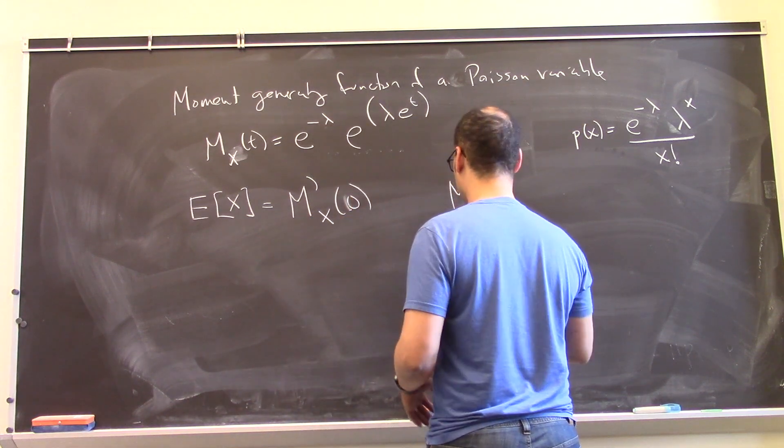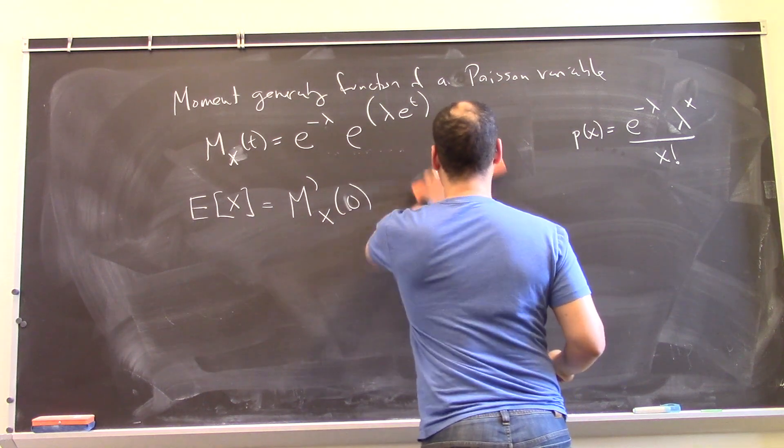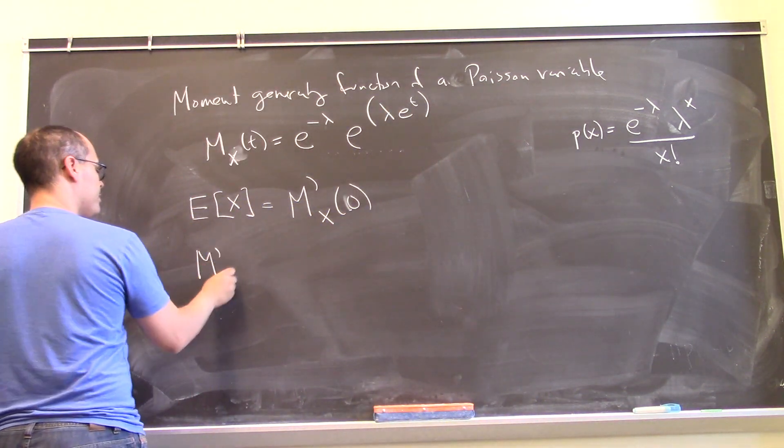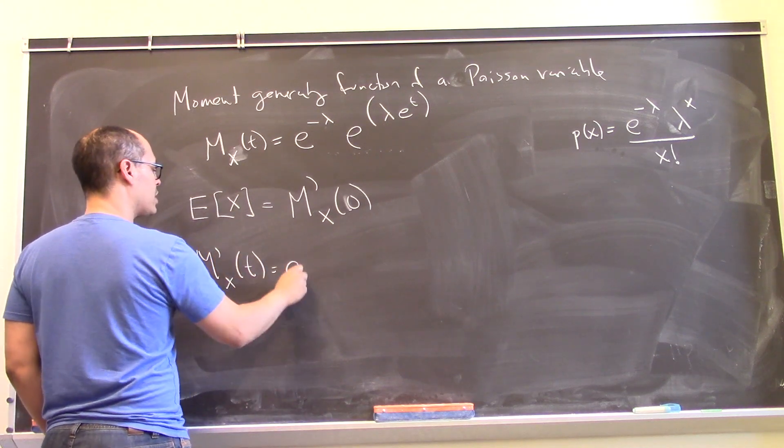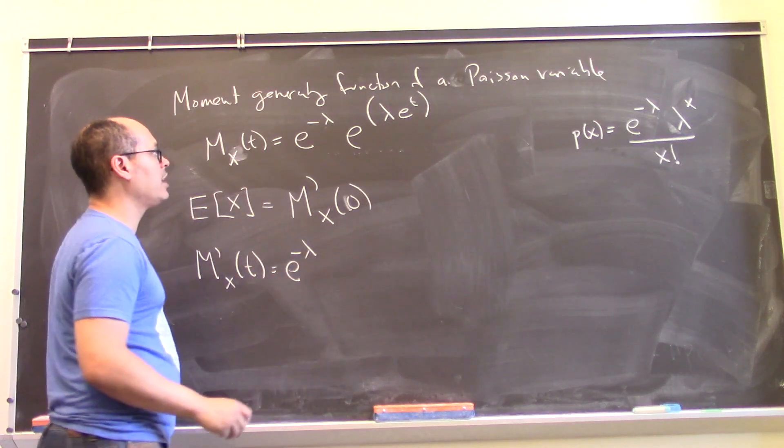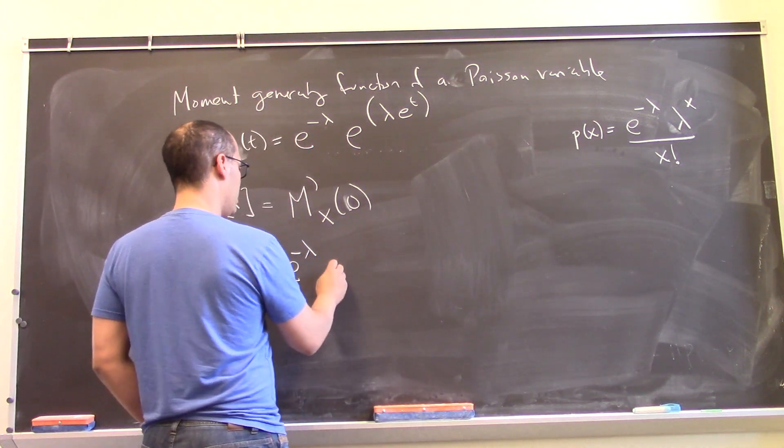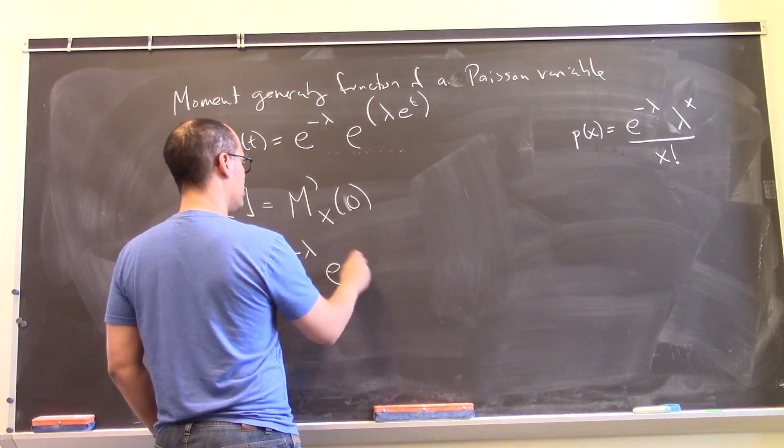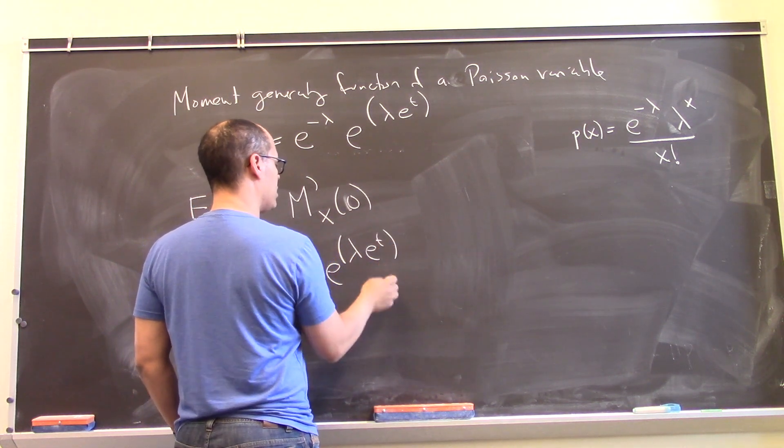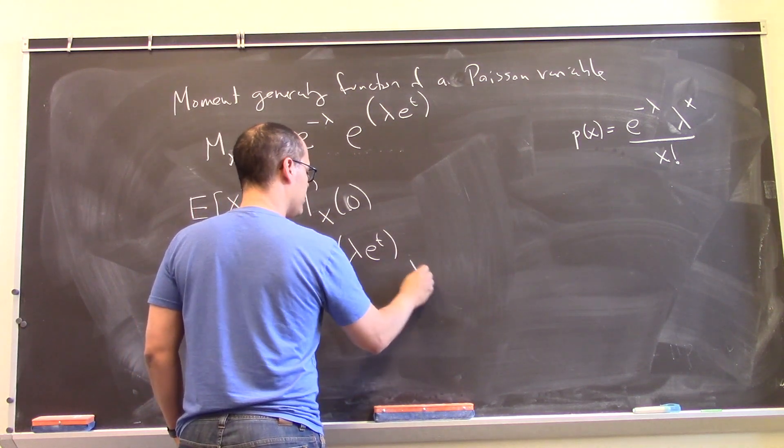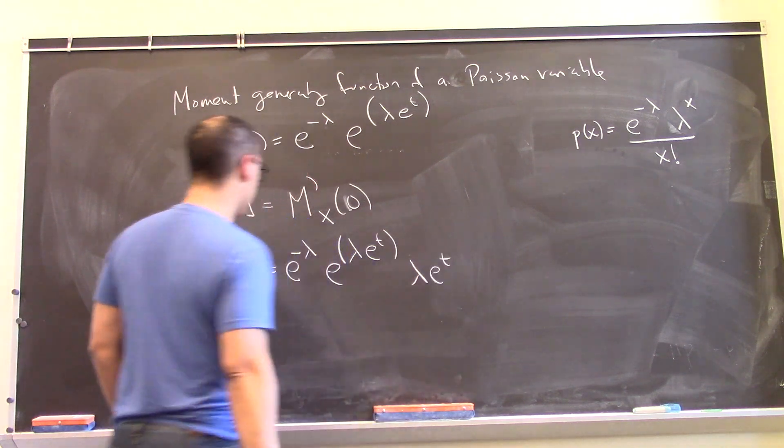So the derivative of the moment generating function, let me write it here. So this is just a constant out in front, the e to the minus lambda. And then I have e to the, the derivative of e to something is either the same thing times the derivative of what's upstairs, which is lambda times the derivative of e to the t, which is itself. So we just get that.